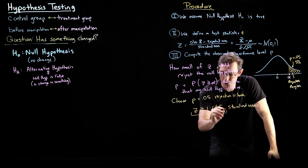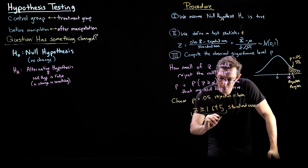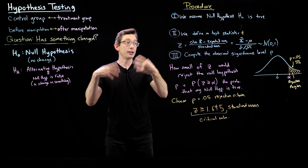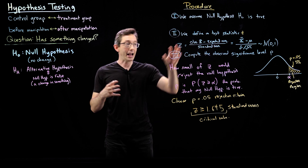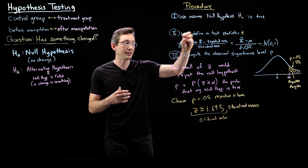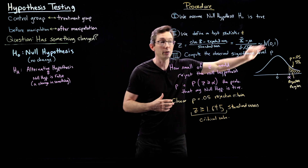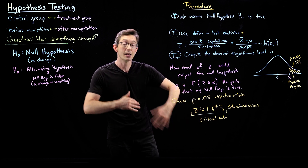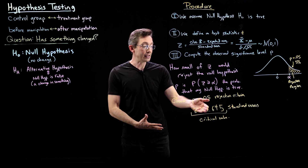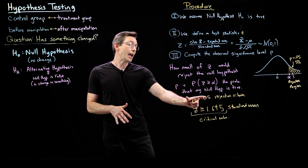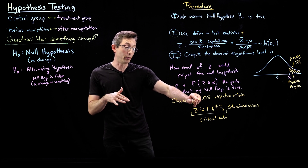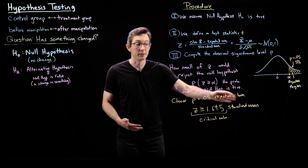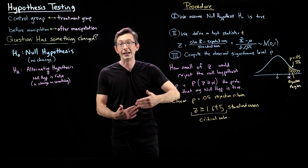So if you collect your data, run your test, calculate this Z value — subtract off the expected mean, divide by the standard error — and you get this Z, which should be unit normal: if Z is bigger than or equal to 1.645, you can reject your null hypothesis with 95% confidence. If Z is less than this value, you fail to reject the null hypothesis. And if I set my threshold P-value at 0.01, needing strong statistical significance, then I would need my Z to be even bigger — more standard errors — to reject the null hypothesis with 99% confidence.